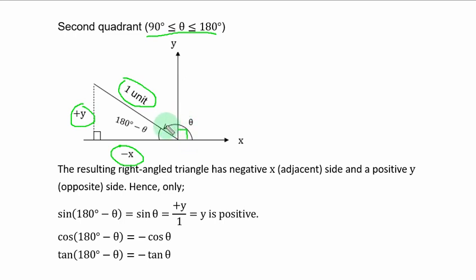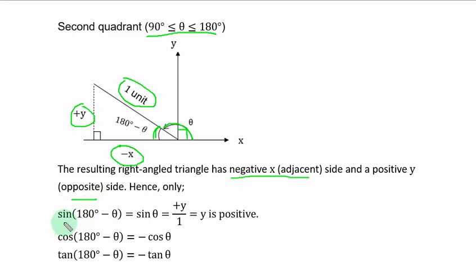From here to here is 90 degrees. If you extend it beyond 90 degrees, angles on a straight line sum to 180 degrees. So if from here to this place is theta, the remaining angle becomes 180 degrees minus theta. The resulting right-angled triangle has a negative x-axis adjacent and positive y-axis opposite. It follows that sin(180 degrees minus theta) is simply equal to sin theta.